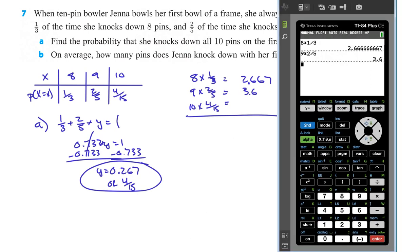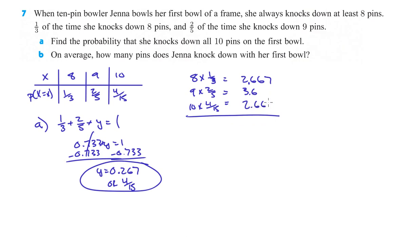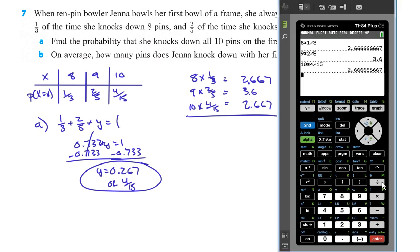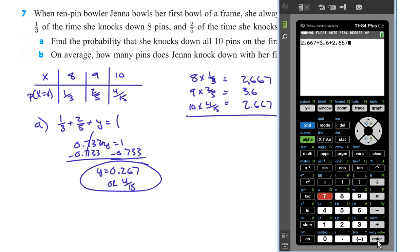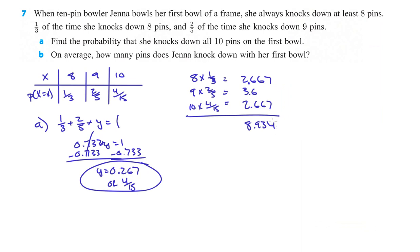And then 10 times 4/15 — that's 10 times 4 divided by 15 — gives us another 2.667. So then we add those all up: 2.667 plus 3.6 plus 2.667 gives us 8.934. On average, Jenna knocks down almost nine — 8.934 — pins.